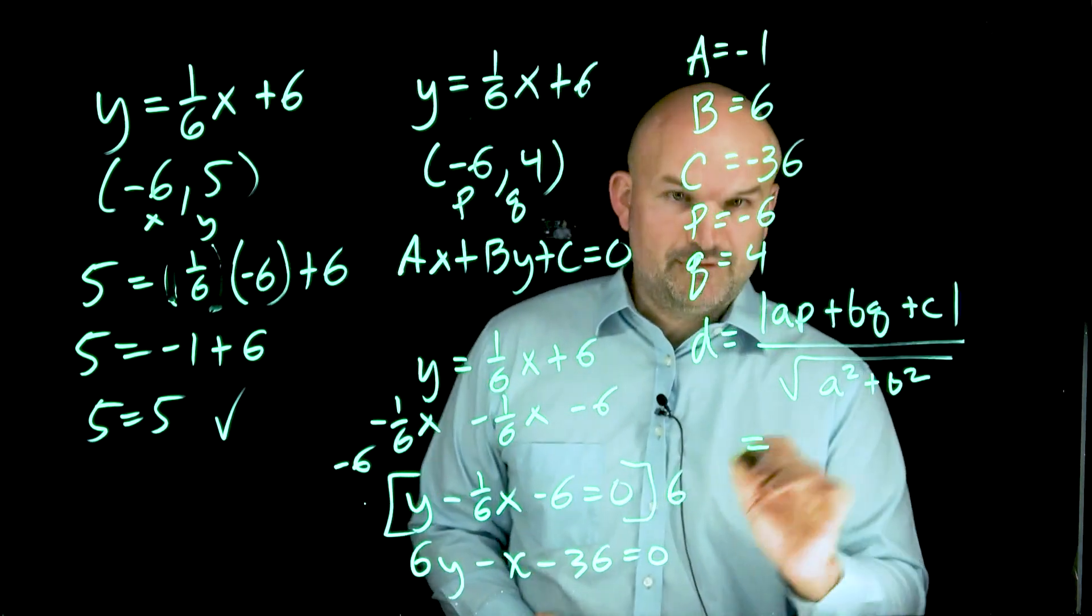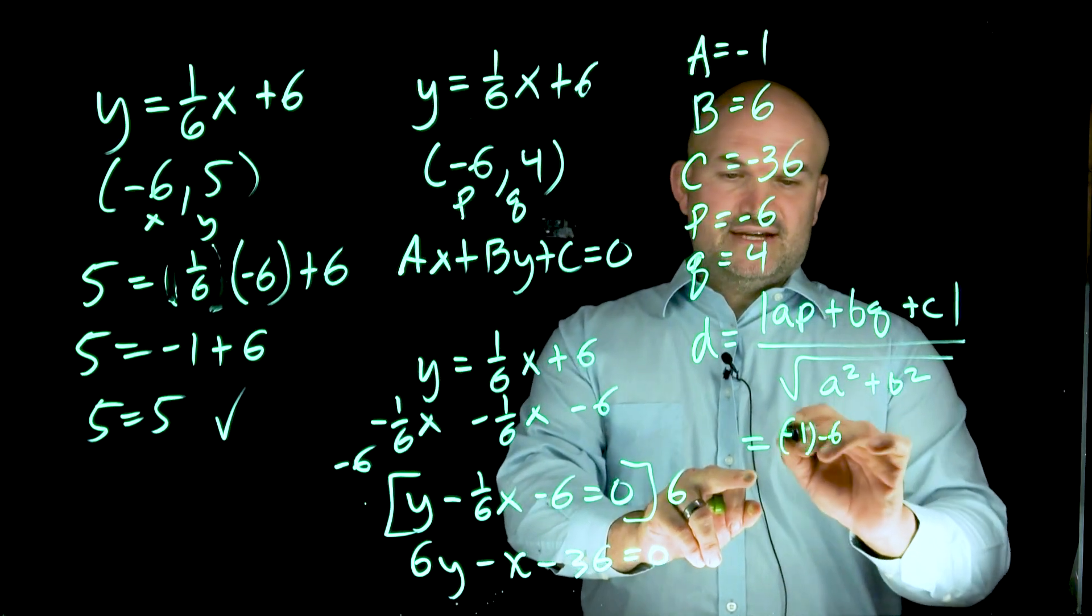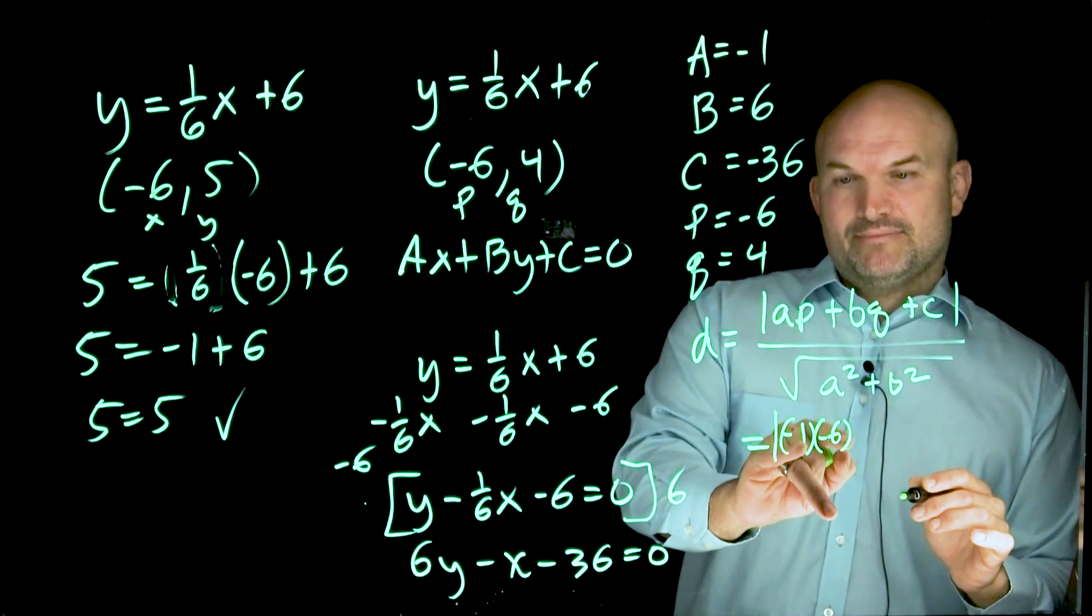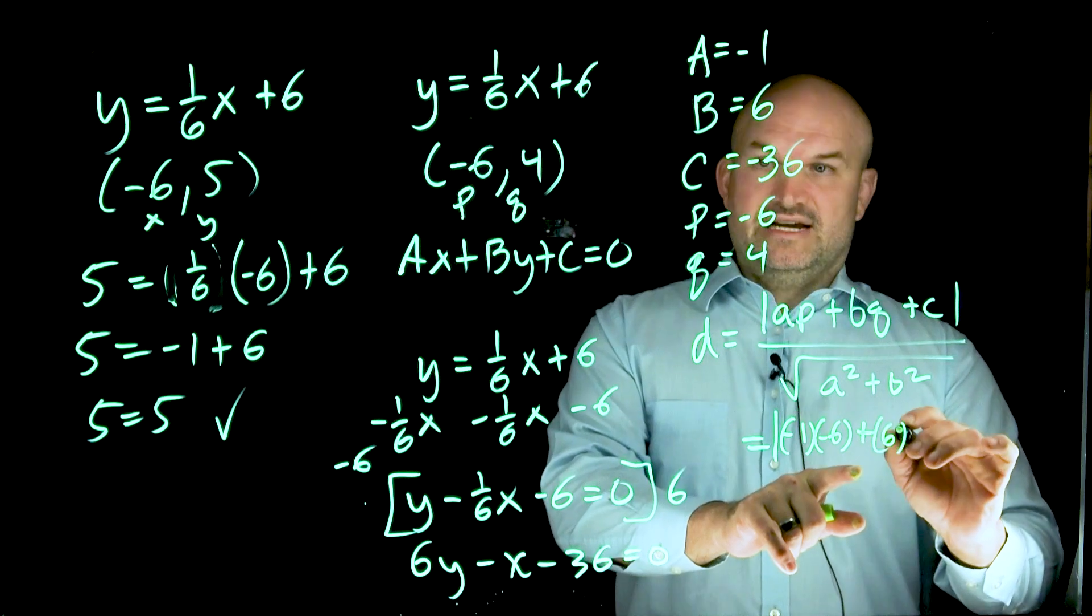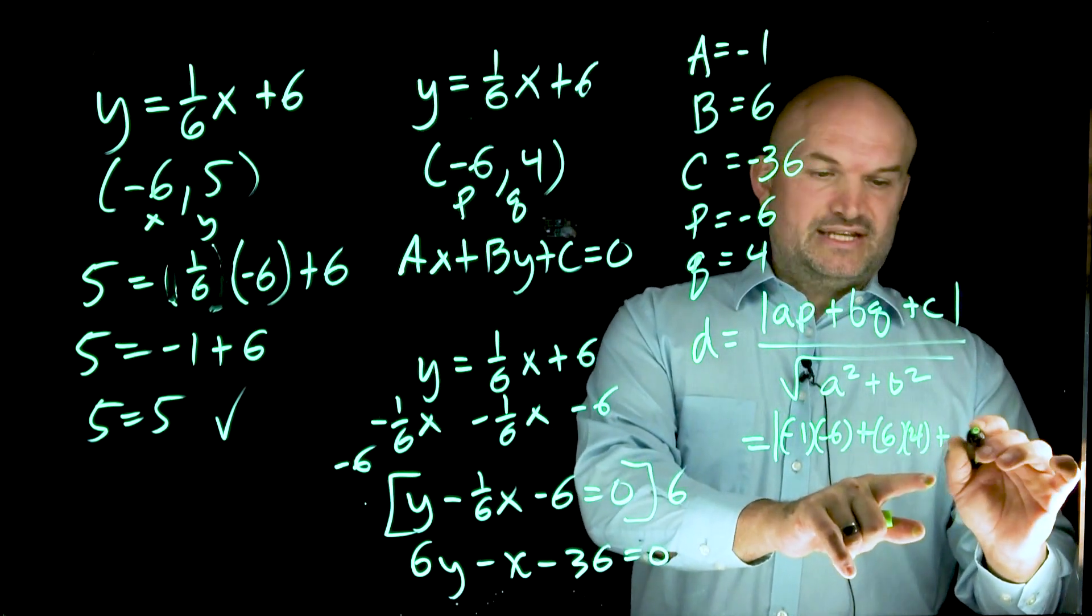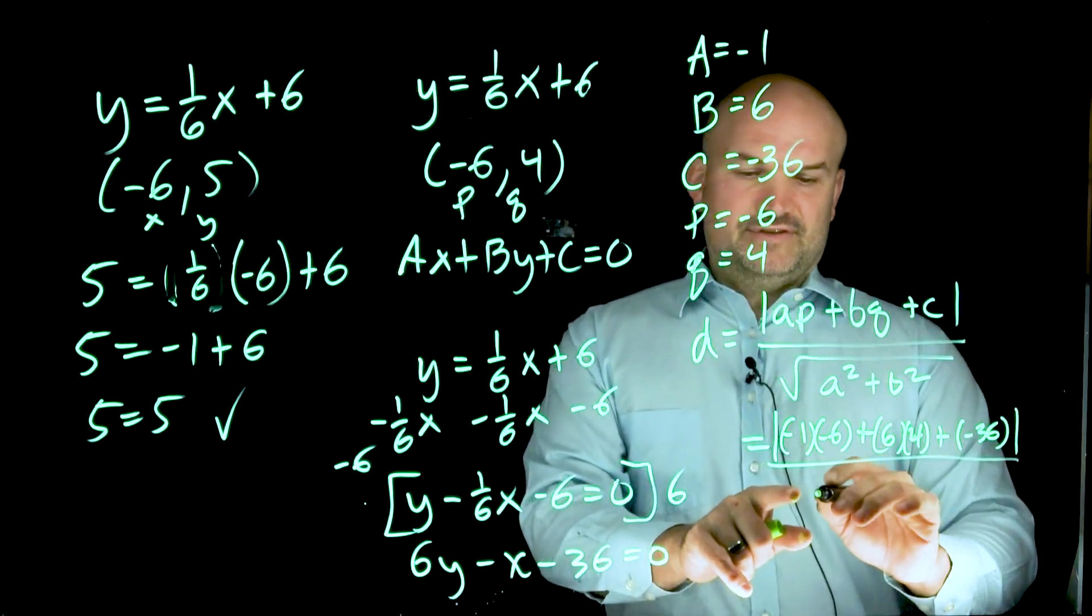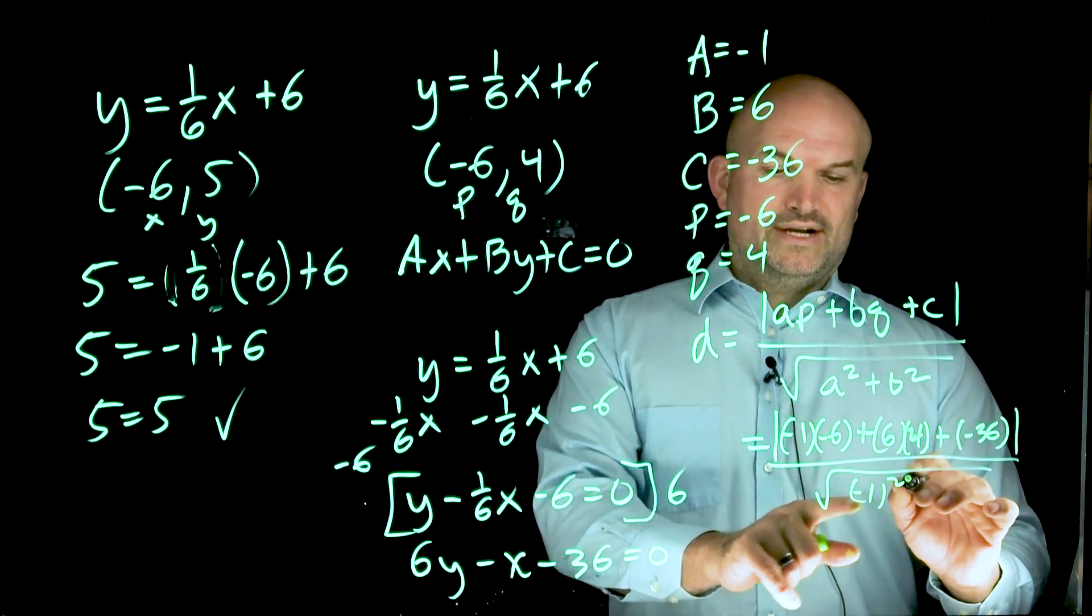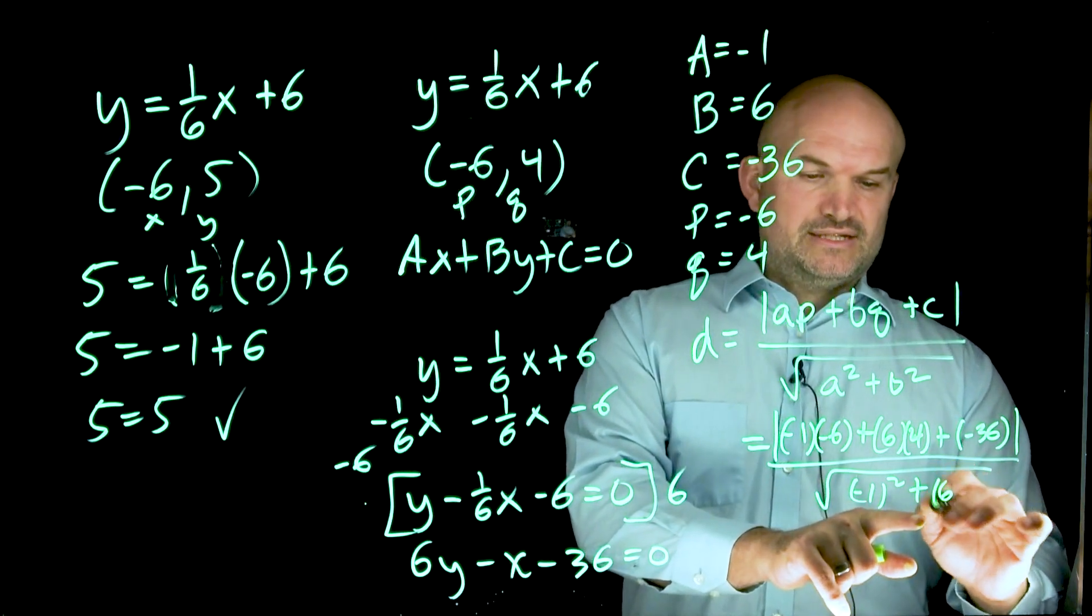I'm running out of space, so I'll try to do my best. So we have A, which is negative one, times P, which is negative six. Now notice this is an absolute value, so I am going to be using parentheses for everything I plug in. That's going to be plus B, which is six, times my Q, which is four, plus C, which in this case is negative 36, in an absolute value. And then I have the square root of A squared, which is negative one quantity squared, plus B squared, which is six squared.